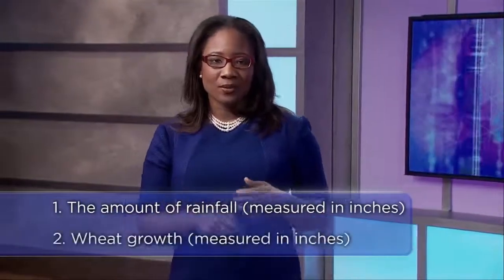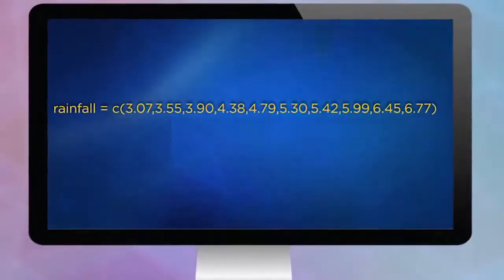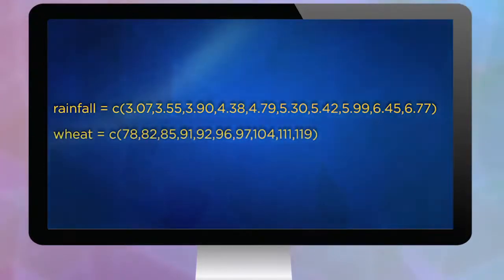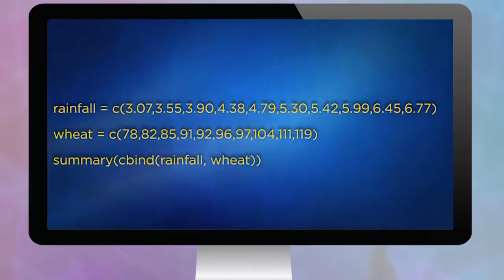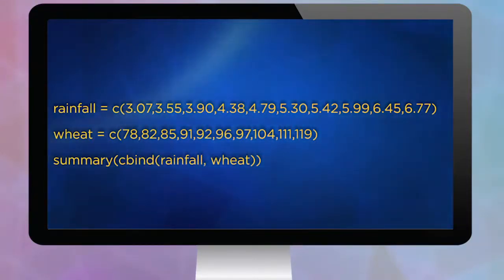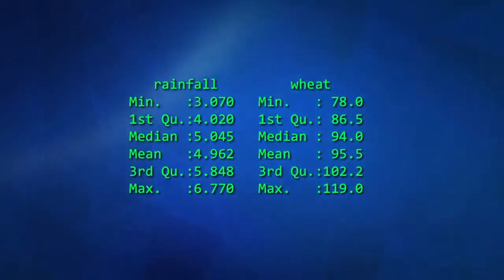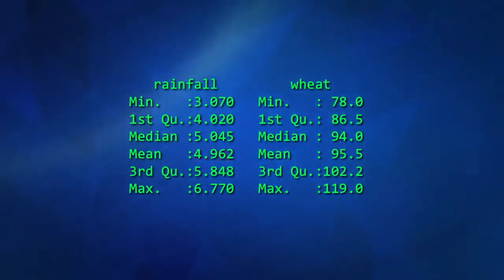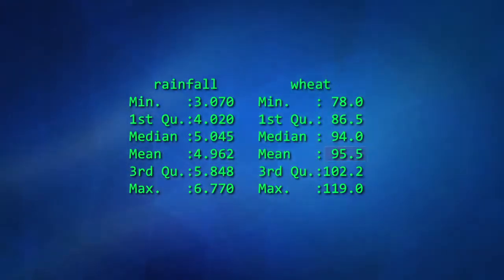We'd like to know: does rainfall have any effect on our wheat yield? We've got 10 data points, each recording the amount of rain in inches and wheat growth in inches. Let's stick this data into R. I'll call it 'rainfall' using the c() function to combine data values, and 'wheat' likewise using the c() function. I'll use cbind to combine them so the summary gives both results. Our summary statistics show that rainfall ranges from a minimum of 3.07 to a maximum of 6.77 inches with a mean of around 4.9.